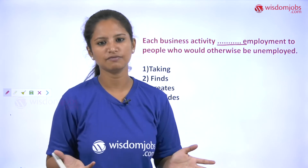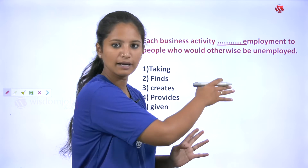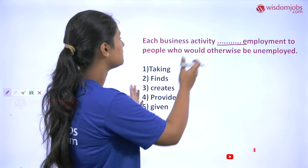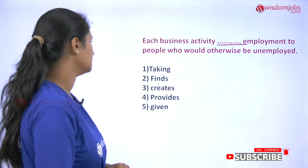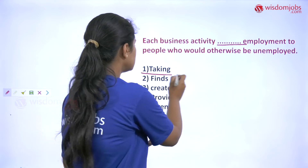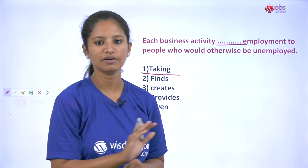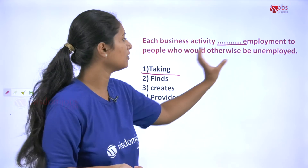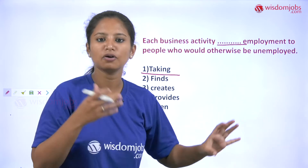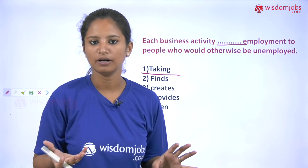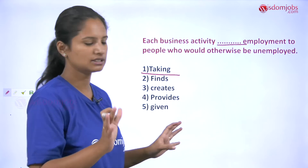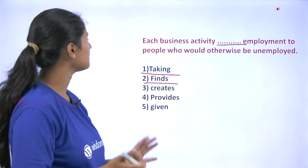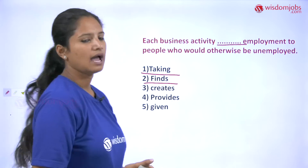Now let us understand the options, because it's a confusing kind of statement, but using these options in that blank will give you a very easy simple trick. Let us use 'taking': 'Each business activity taking employment to people who would otherwise be unemployed.' 'Taking' itself gives a grammatical error — you can never use 'taking' here, because it's something regarding taking from a person, but here you are giving something to a person. So you cannot use 'taking' here. Next, 'fines': 'Each business activity fines employment' — you cannot use 'fines' either.